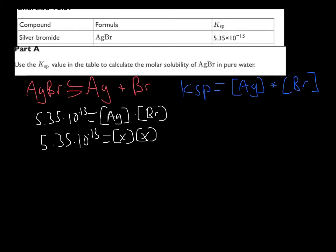Well, as we all know, algebra shows this is X squared equals 5.35 times 10 to the minus 13. Take the square root, 5.35 times 10 to the minus 13.